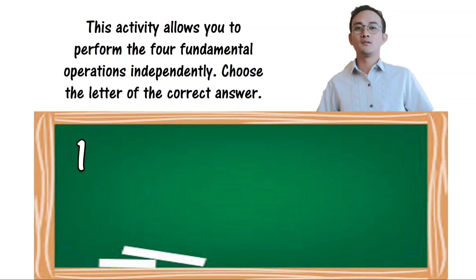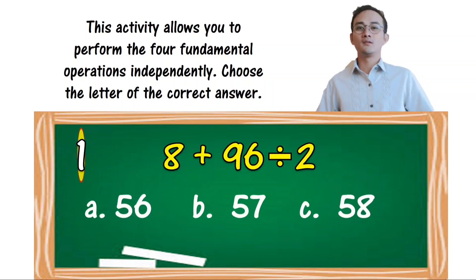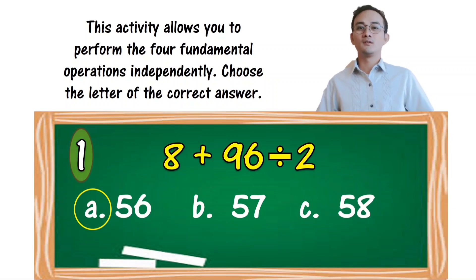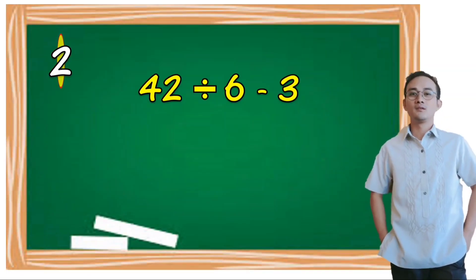This activity allows you to perform the four fundamental operations independently. Choose the letter of the correct answer. 8 plus 96 divided by 2. A) 56, B) 57, C) 58. The correct answer is A, 56.